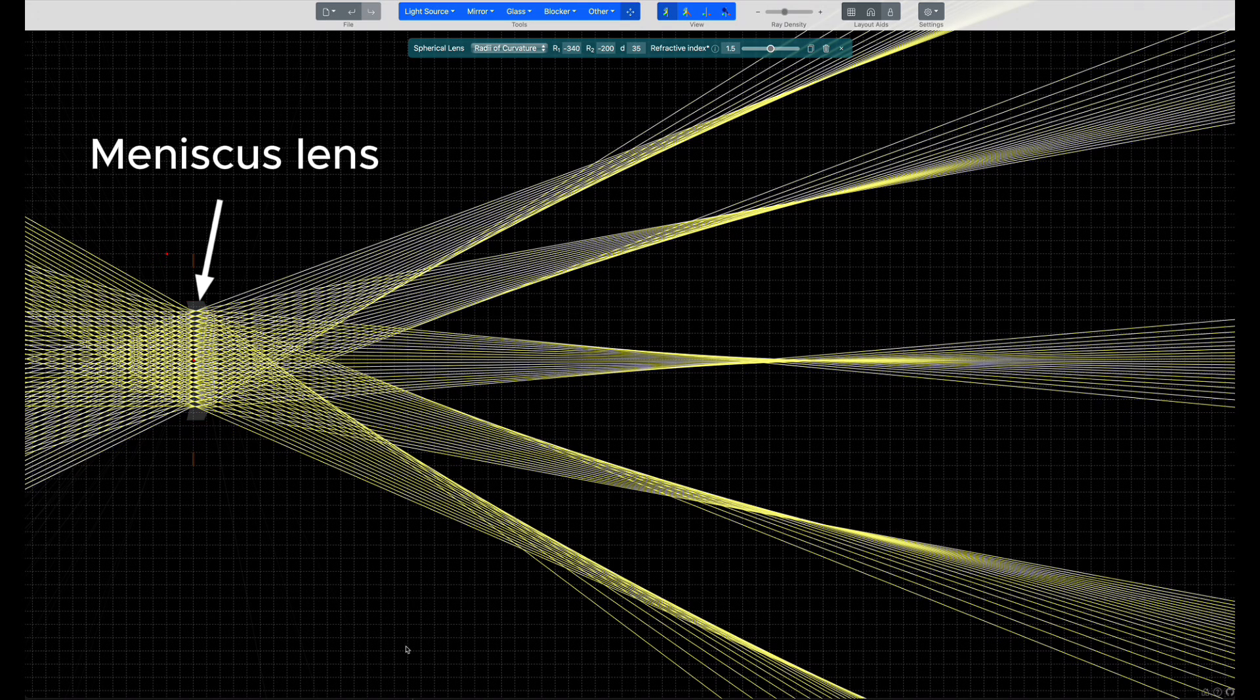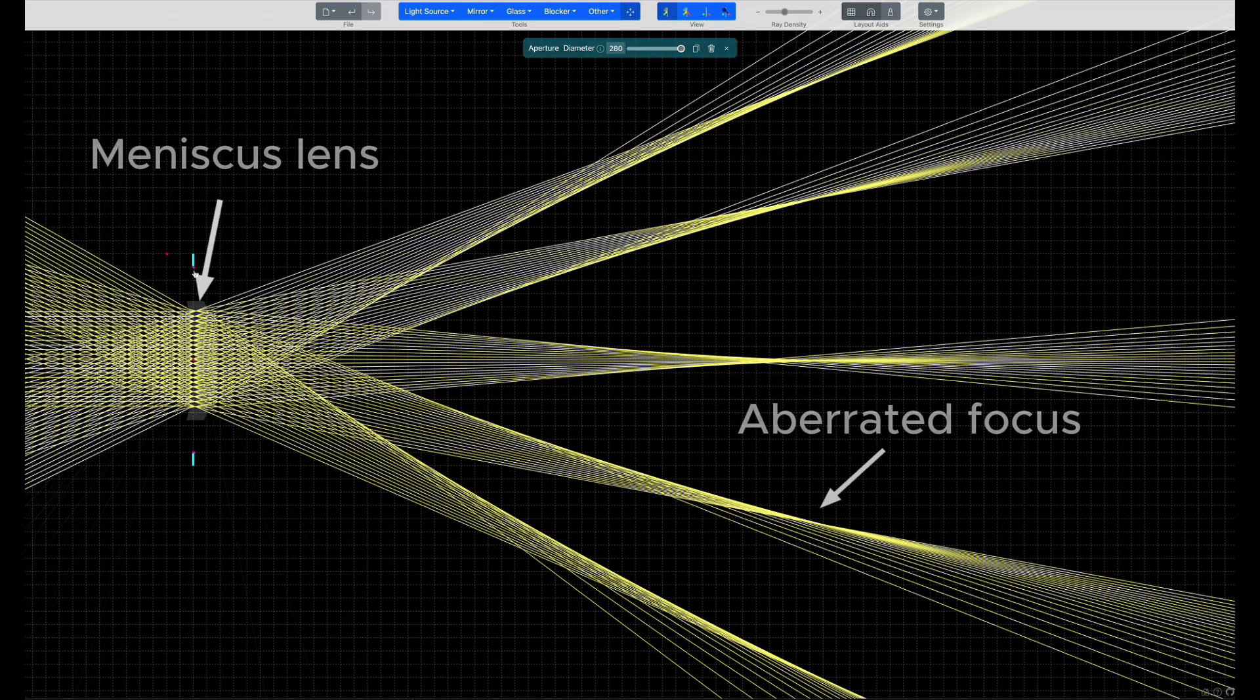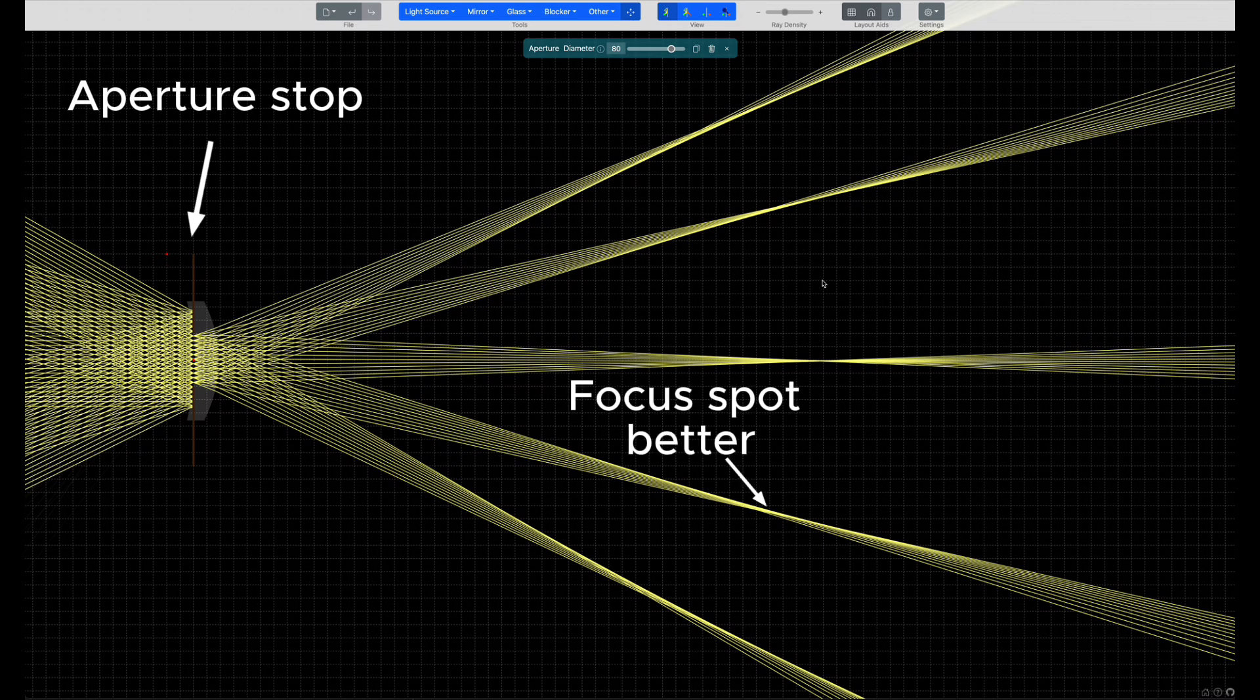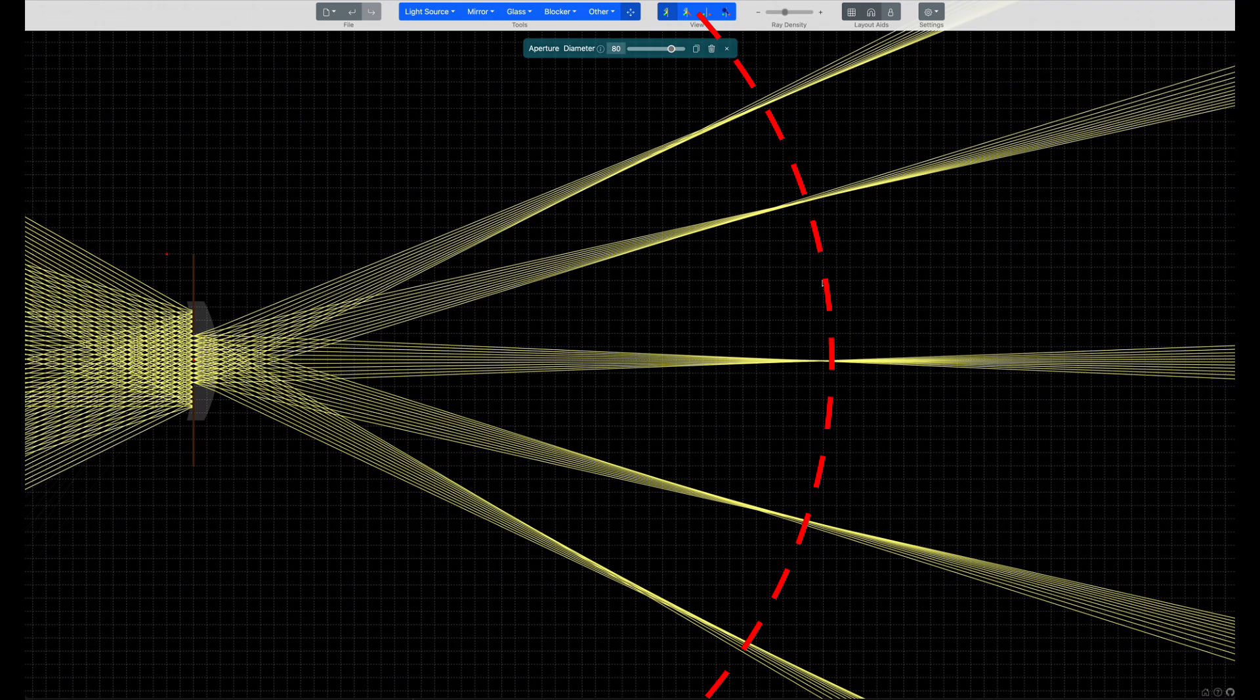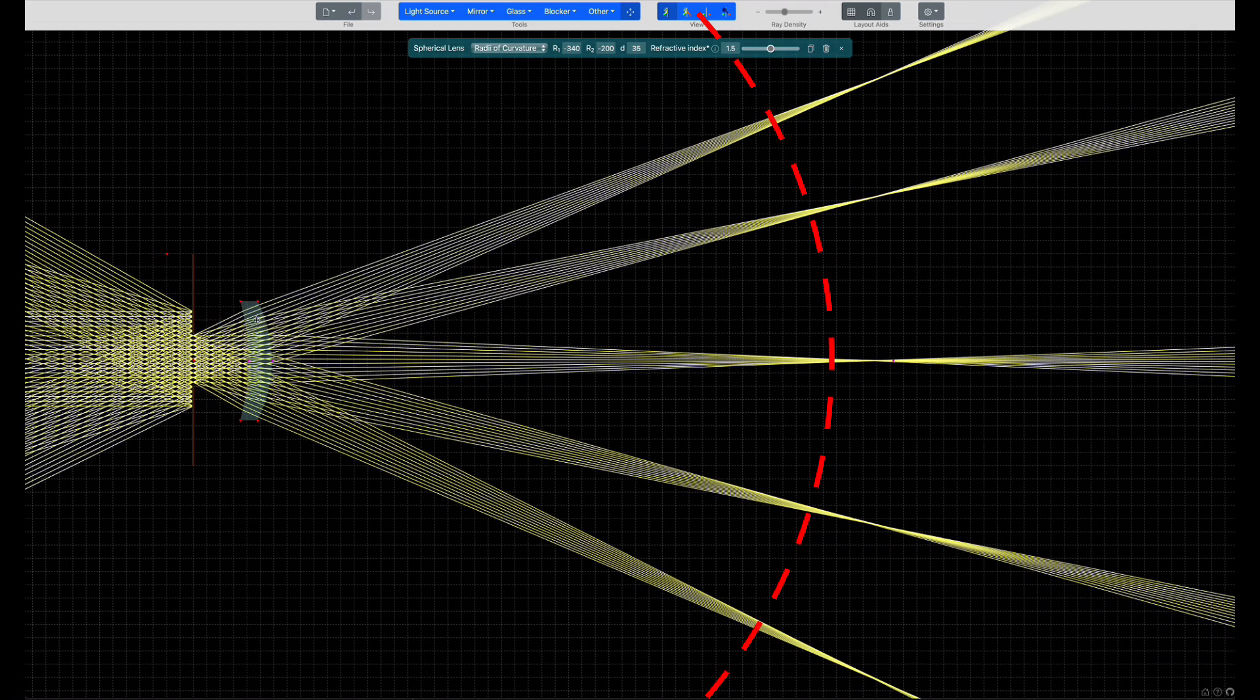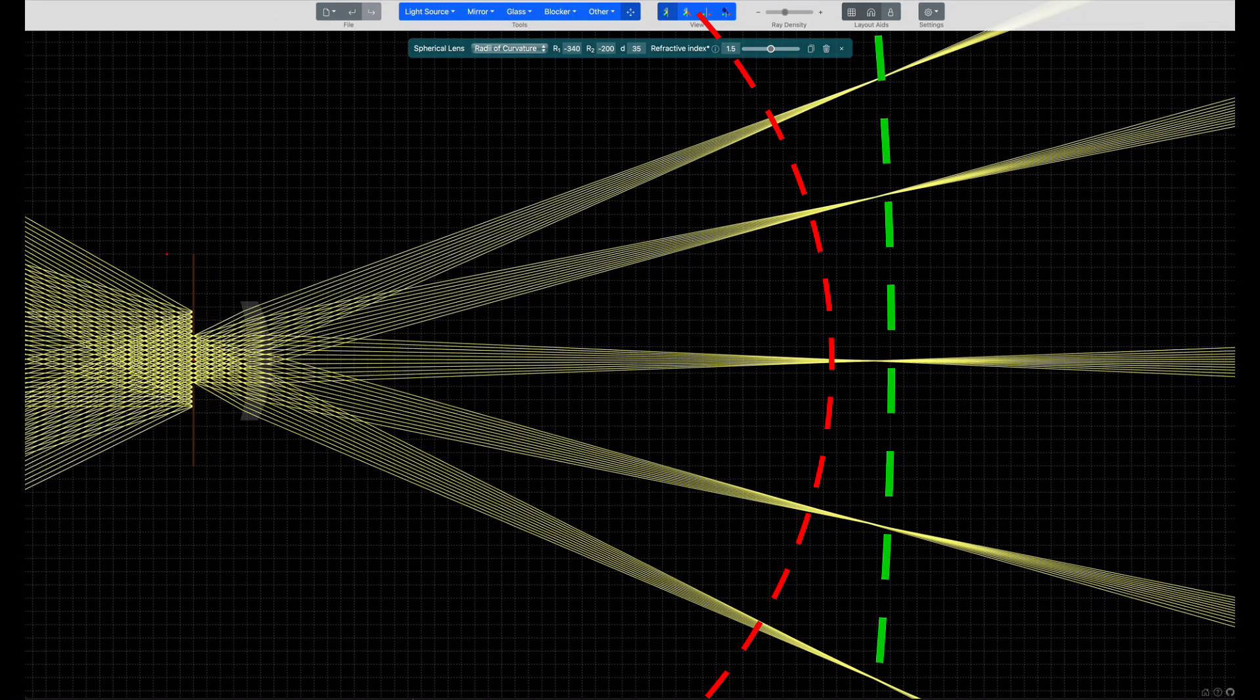When a positive meniscus lens alone images a scene, the aberrations are terrible. Aperture stops in general make the light cone entering the system smaller, which reduces the aberrations. But the field curvature is still pretty bad, which is a problem for flat 2D detectors. By adjusting the stop position, the field curvature can be further reduced so that the image is in focus on the sensor over the full field of view.